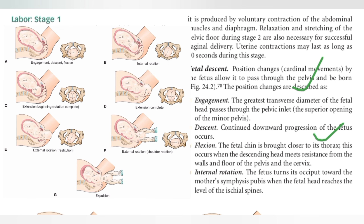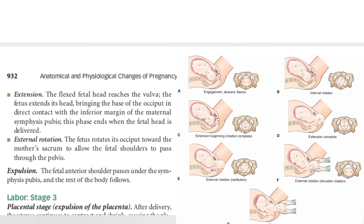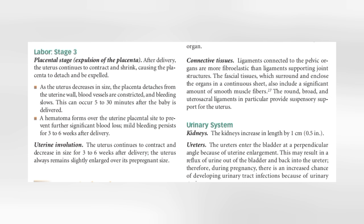After flexion, internal rotation occurs — the fetus turns its occiput toward the mother's pubic surface when the fetal head reaches the level of the ischial spine. After internal rotation, extension occurs: the fetal head reaches the outlet and extends, bringing the base of the occiput into direct contact with the inferior margin of the maternal pubis. This phase ends when the fetal head is delivered. Then external rotation occurs, where the fetus rotates its occiput toward the mother's sacrum to allow the fetal shoulders to pass through the pelvis. Finally, expulsion occurs as the anterior shoulder passes under the pubic surface and the rest of the body follows.